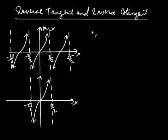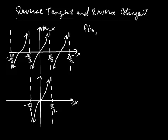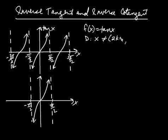Here we're going to discuss inverse tangent and inverse cotangent. At the very top, I've graphed the tangent function, and I can see that this function is not one-to-one — it doesn't pass the horizontal line test. The domain is x cannot be an odd multiple of pi over 2, and the range is negative infinity to infinity.